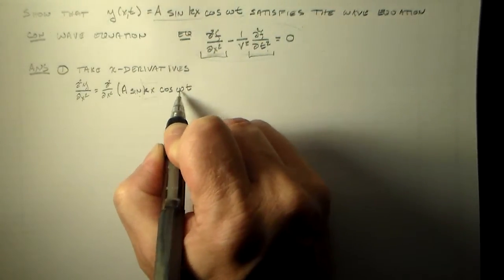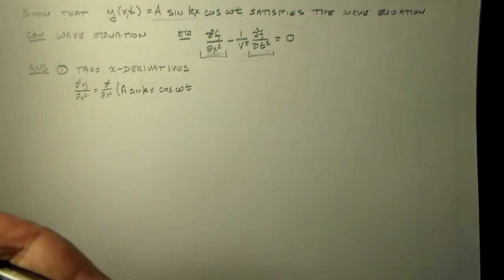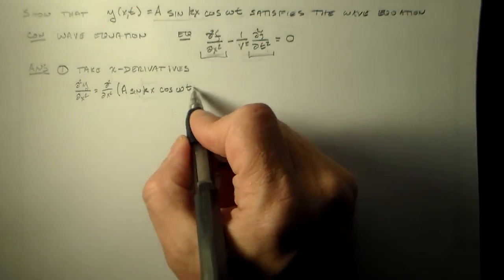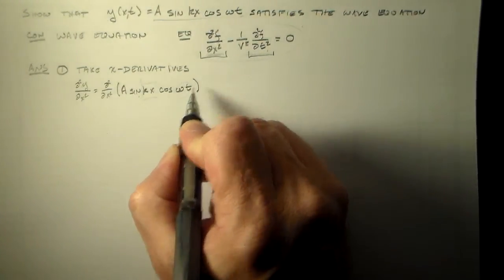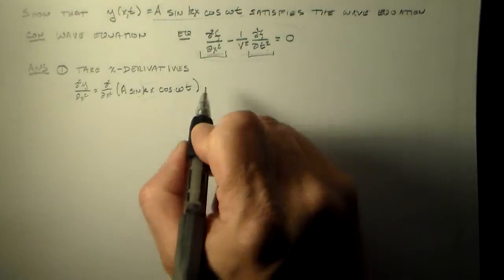Cosine omega t, again, omega times t, unitless. It needs to be unitless in here, so you always need a frequency times the time.